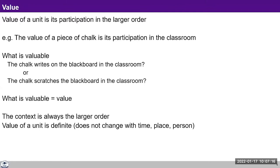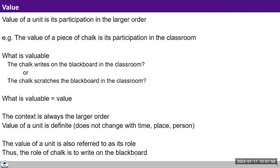The context is always the larger order, and the value of any unit does not change with time and doesn't change with place. A piece of chalk can write some certain number of words — that's all it can do, whether it is priced at 10 paisa or one rupee or five rupees. The value of that chalk is that it is able to help us write so many words.